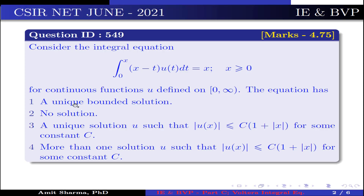The equation has option 1: a unique boundary solution; option 2: no solution; option 3: a unique solution u such that |u(x)| ≤ c(1 + |x|) for some constant c; option 4: more than one solution u such that |u(x)| ≤ c(1 + |x|) for some constant c.